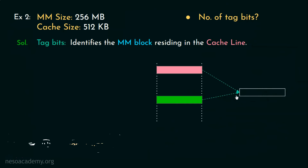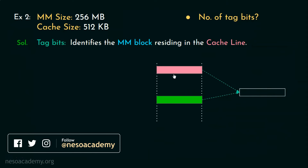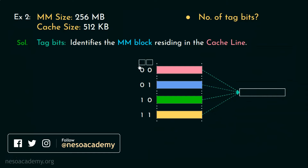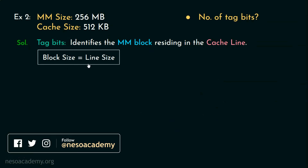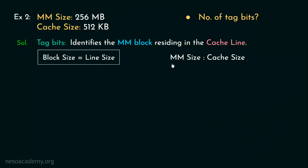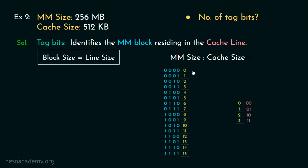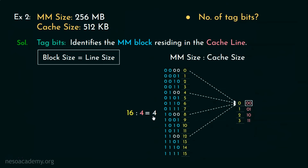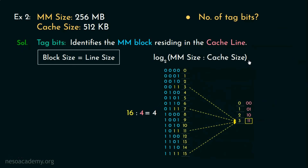If two different main memory blocks are mapped onto a single cache line, we need one bit to distinguish between them. With four different main memory blocks mapped onto a single cache line, we need two bits — these are the tag bits. Since main memory blocks and cache lines are equal in size, the ratio of main memory size to cache size tells us how many main memory blocks map onto each cache line. Applying log base 2 to this ratio gives the number of required tag bits.